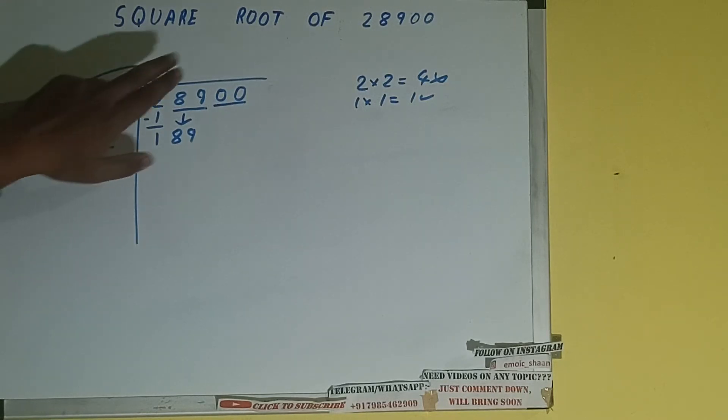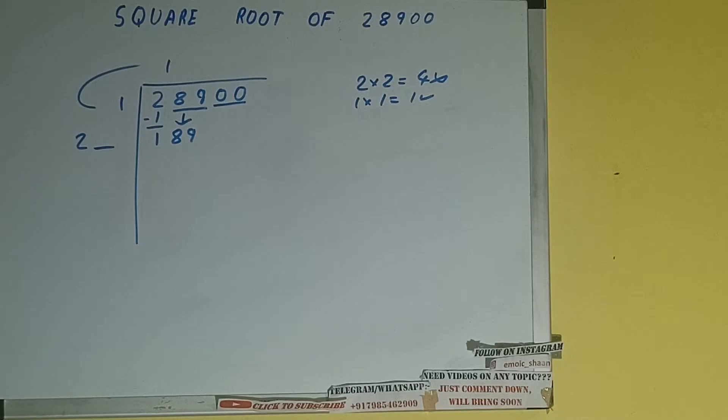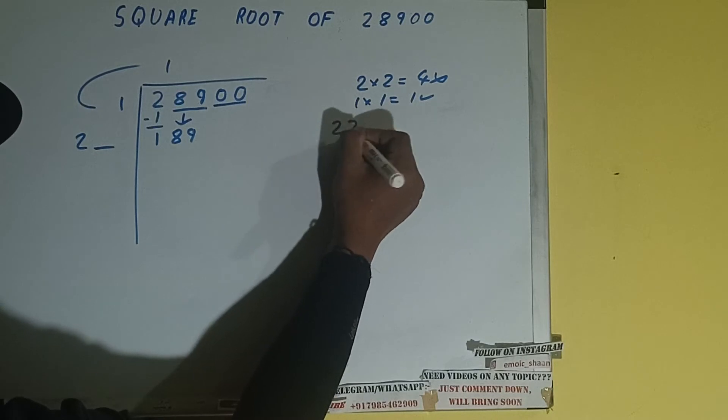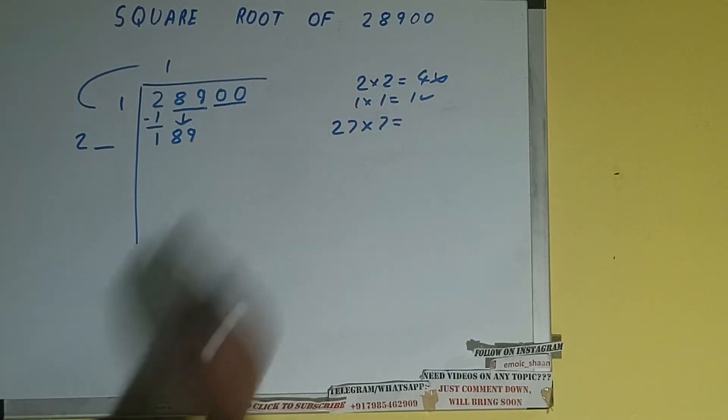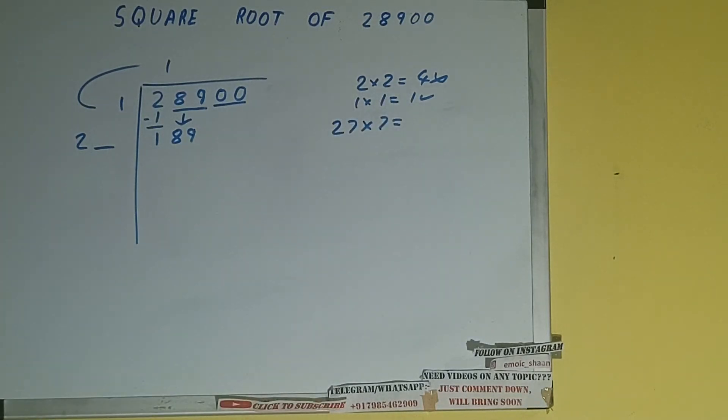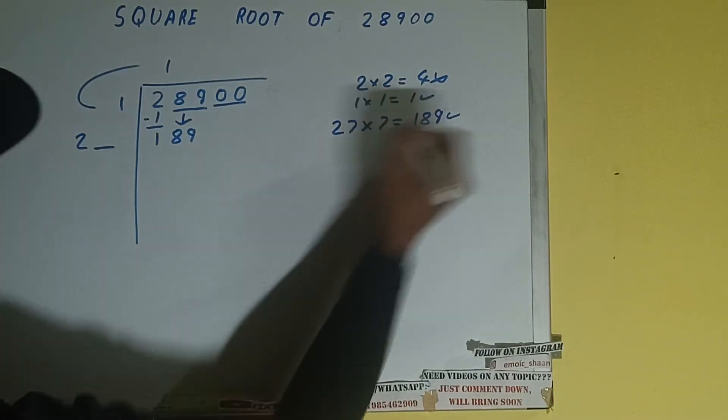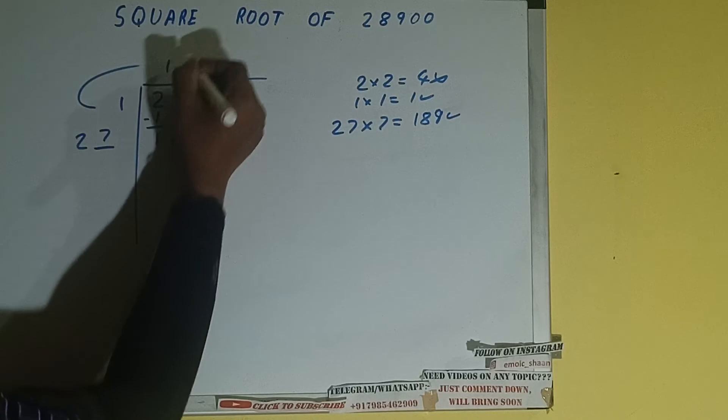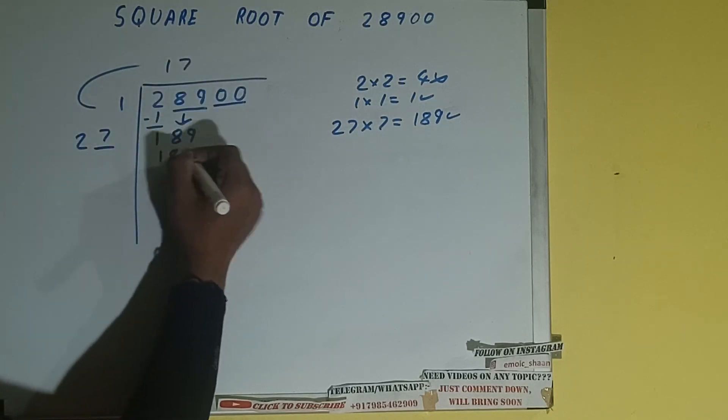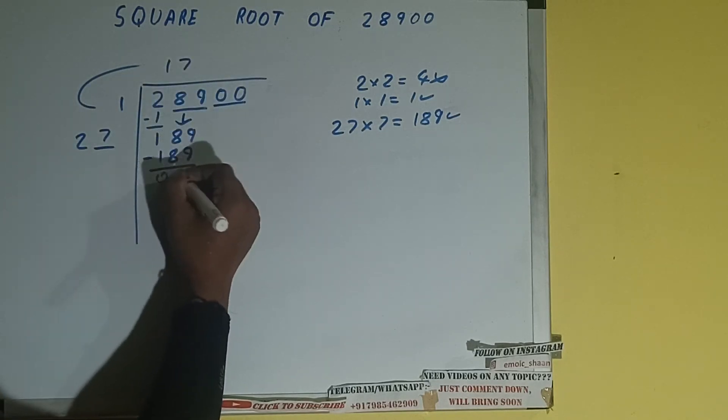Now whatever number we write here we need to write here also. So if we try seven times, that is 27 into 7, it will be 189, which is good to take. So 7 here and 7 here. 189 subtract 189, 0 will be left.